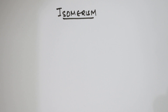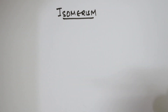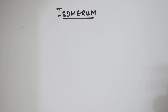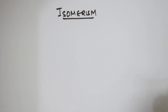Basically, how can we define isomerism? It is a phenomenon in which two or more compounds have the same molecular formula, but we can assign them different molecular structures. So, isomerism is defined as a phenomenon by virtue of which, when two or more compounds have the same molecular formula, we can assign them different molecular structures.